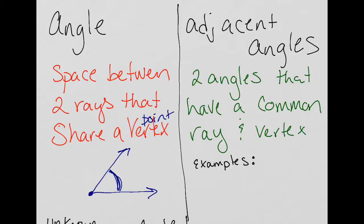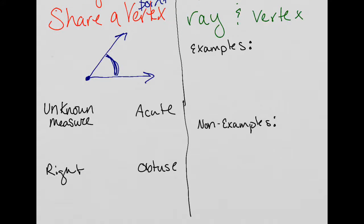This angle here has no measurement, so I can't say if it's a right angle, acute, obtuse, straight, so forth. All I know is that it's an angle. Now, with that in mind, here is an example of an unknown measured angle.